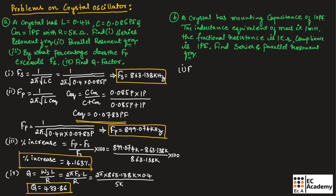Let us find the series resonant frequency: Fs = 1/(2π√(L·C)). Substituting L = 1 millihenry and C = 1 picofarad, we get the series resonant frequency equal to 5.033 megahertz.